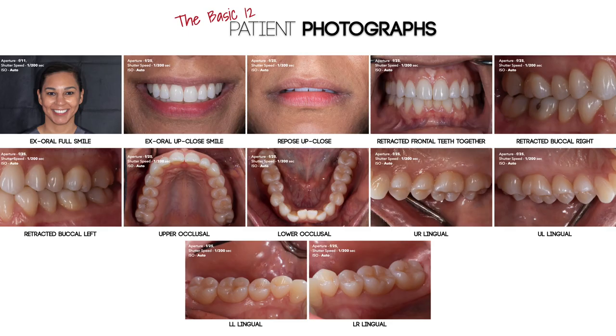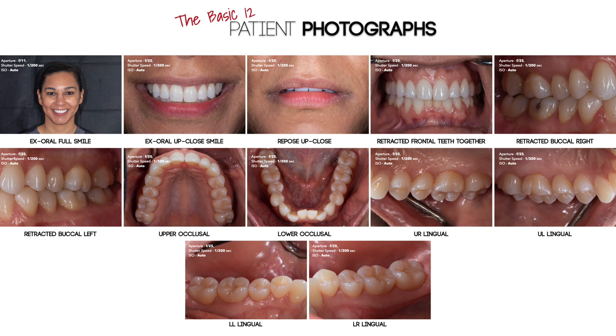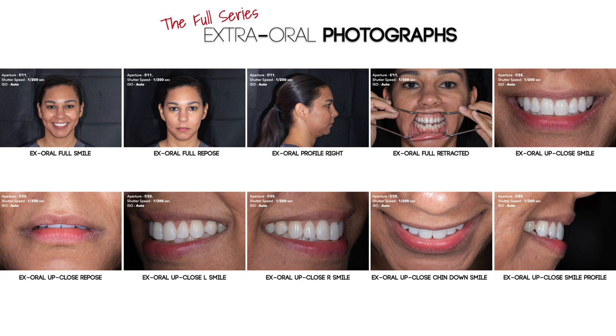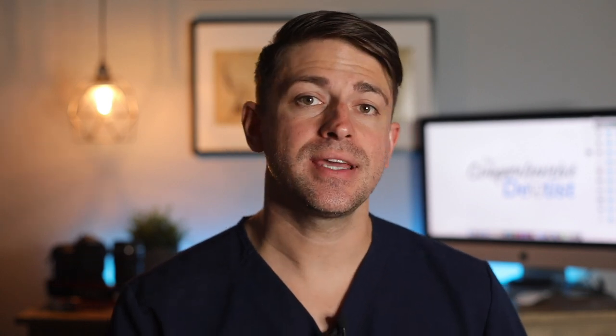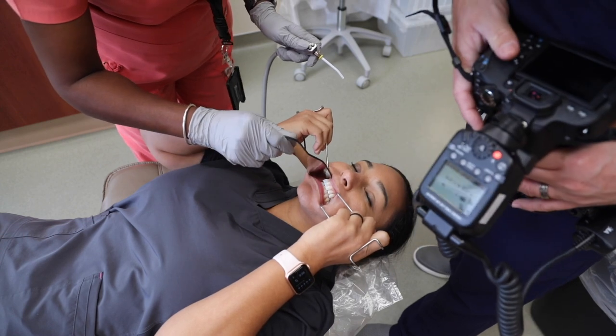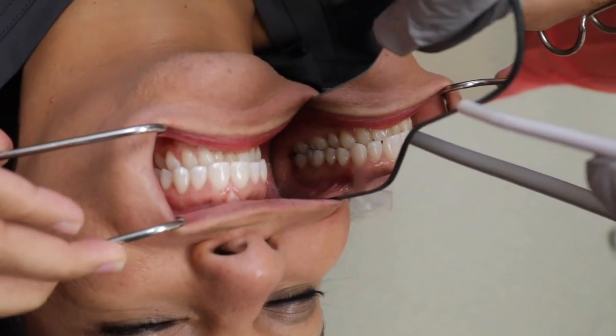Now that you have seen some examples of various shots and photographic series options that I use in my practice, you need to decide what images would benefit you and your situation. The examples I have shown you were created using a Keynote presentation. You could also use PowerPoint, and these can be printed out and placed close to where you take photos so you can remember what shots you want to take for various situations.